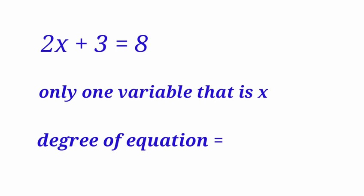The variable is x, and the exponent of x equal to 1. So, the degree equal to 1. This is an example for linear equation in one variable.